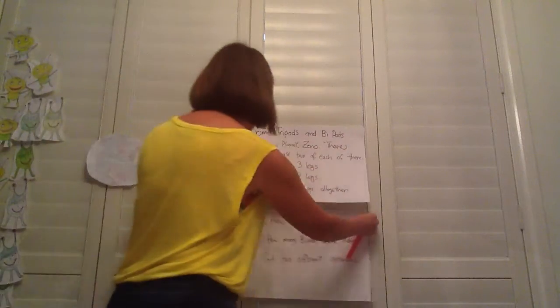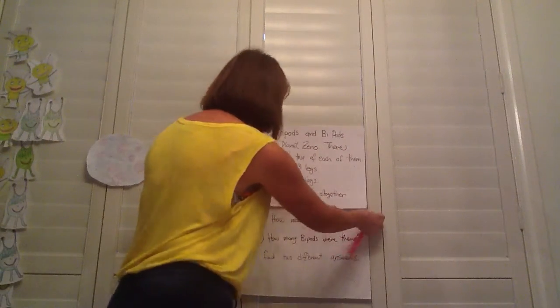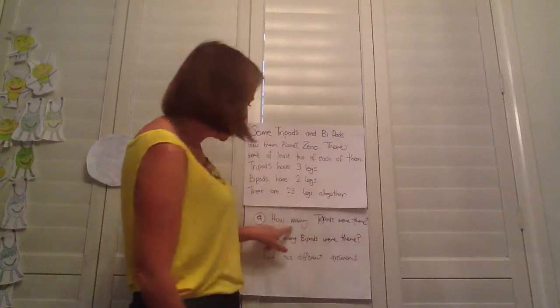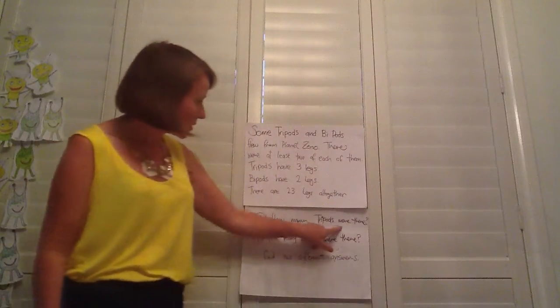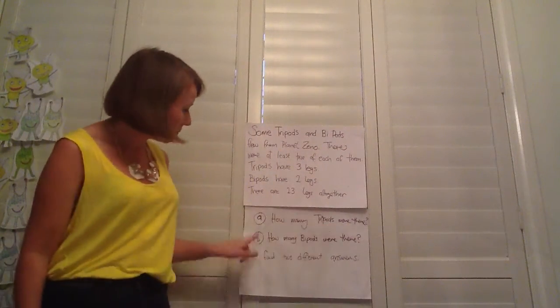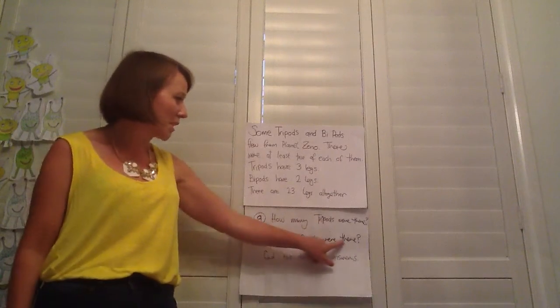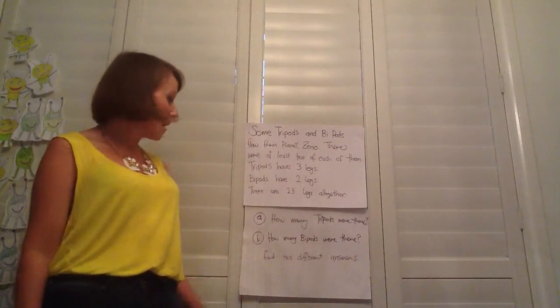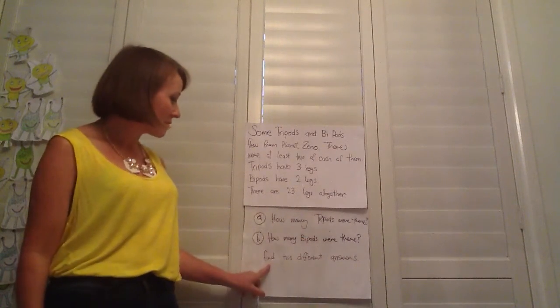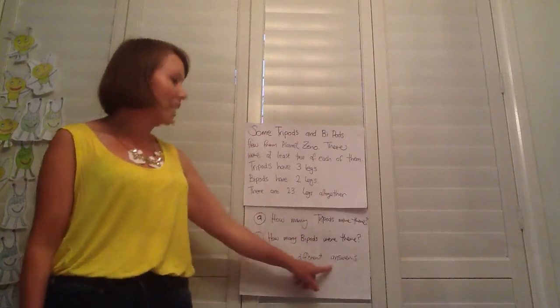We have to find out: A, how many tripods were there? And B, how many bipods were there? And we have to find two different answers.